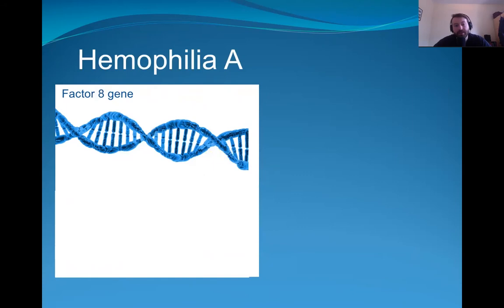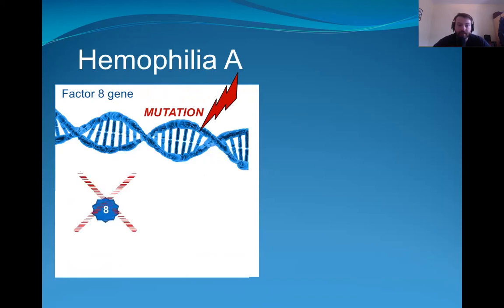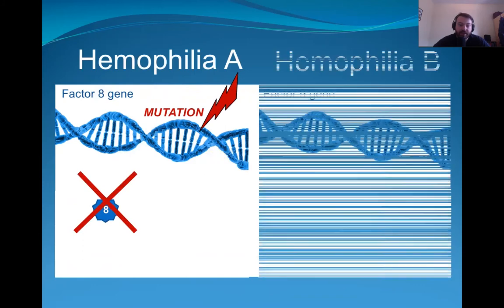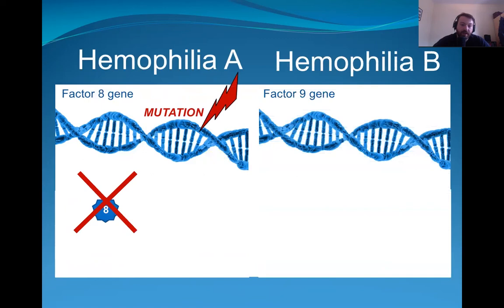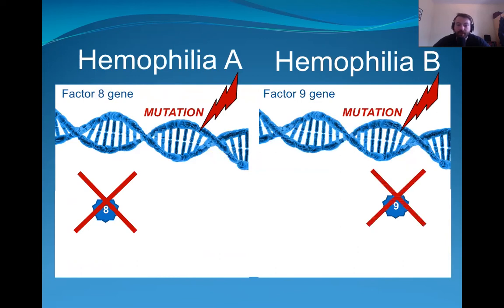So what happens when someone has hemophilia? Hemophilia A is the result of a mutation in the factor 8 gene, which means it will produce less factor 8 activation, and therefore the factor 8 protein will function less well than in someone without hemophilia A. The same can be said of hemophilia B — hemophilia B patients have a mutation in their factor 9 gene, which means the factor 9 proteins don't function as well as in someone without hemophilia.